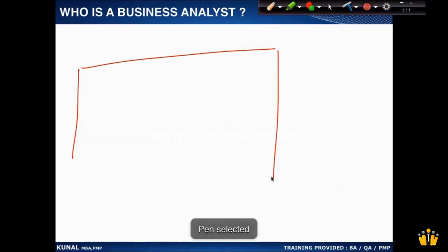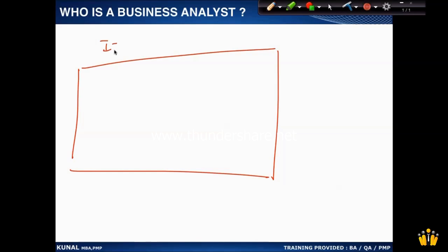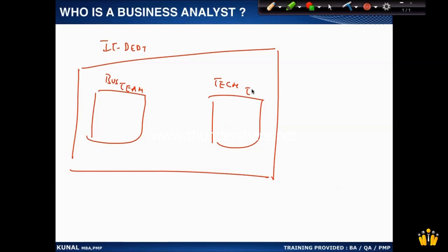In an IT department we have two different groups of people: one group is called the business team and the other group is called the technical team. The business analyst acts as a mediator between these two — on one side the business team, on the other side the technical team. What exactly a BA does as mediator we'll see in a few minutes.